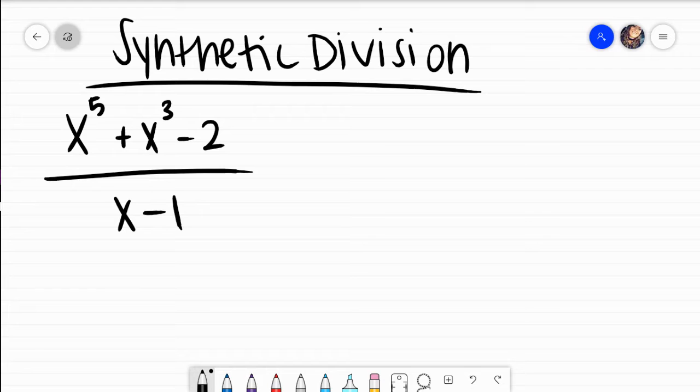Okay, so notice here that we actually can't use any exponent rules. There would be no way to simply divide x to the fifth divided by x or x cubed divided by x. And the reason being, it's not strictly multiplication up top and in the bottom. What I have here is addition, subtraction. Because of those operation signs, that needs to be your first clue that simply reducing is not really an option.